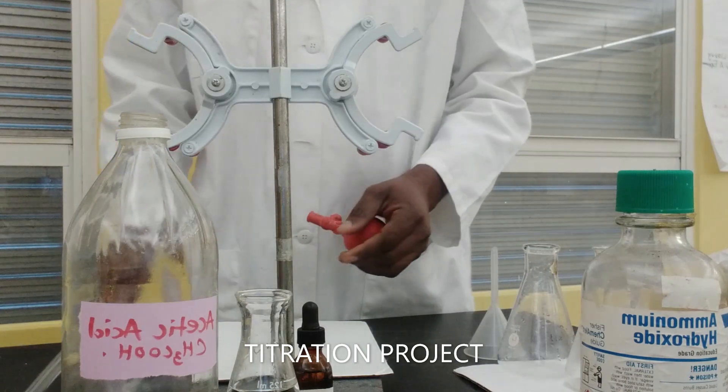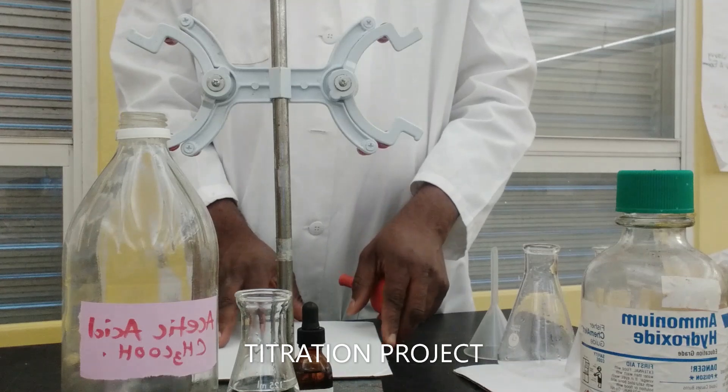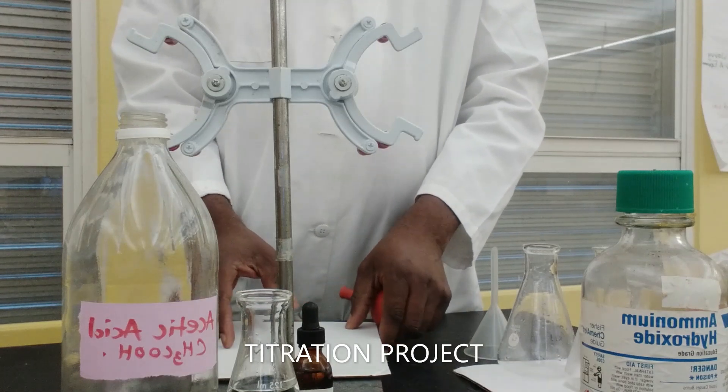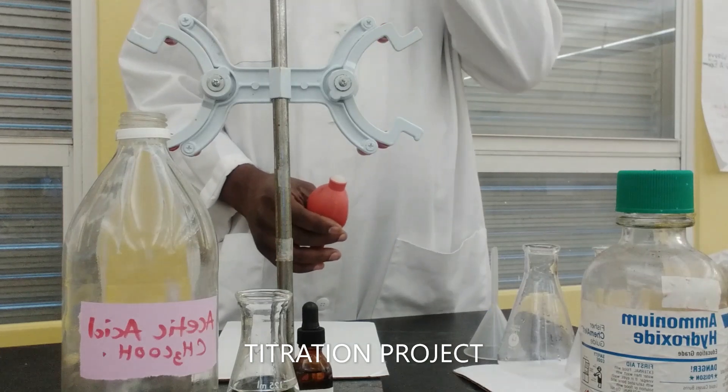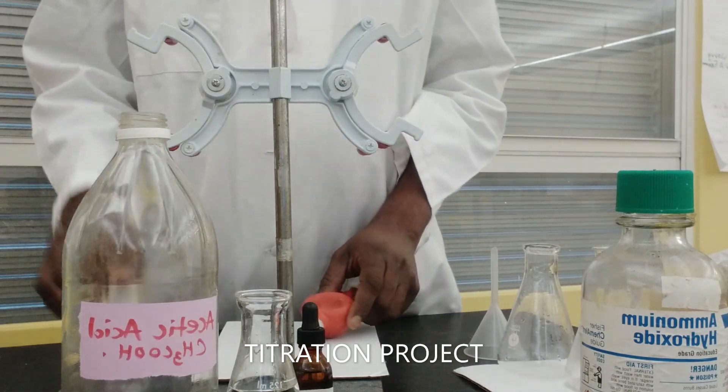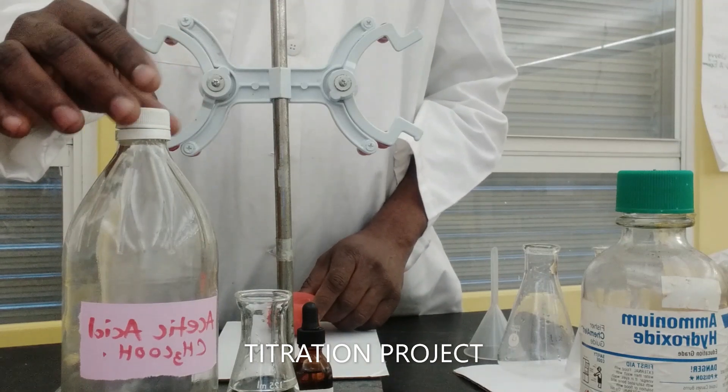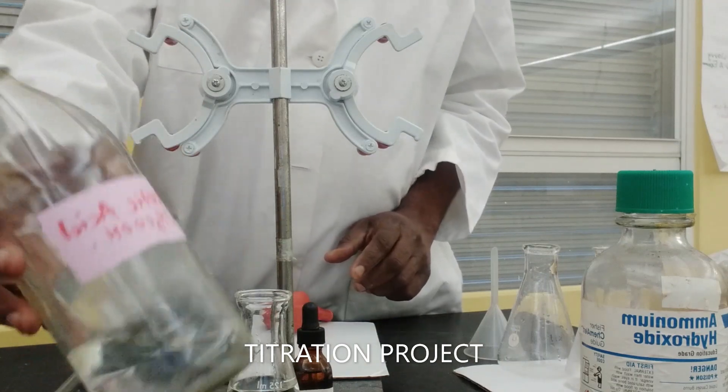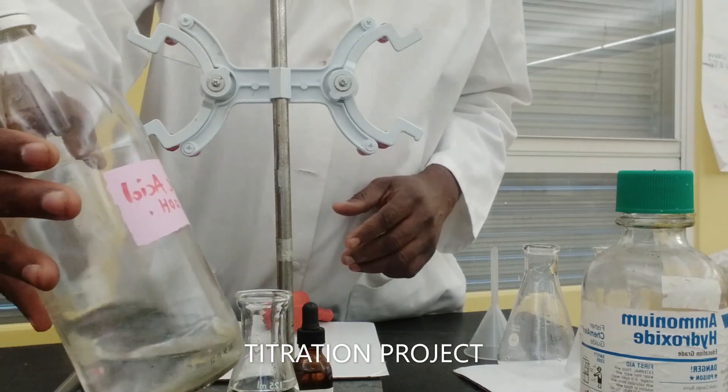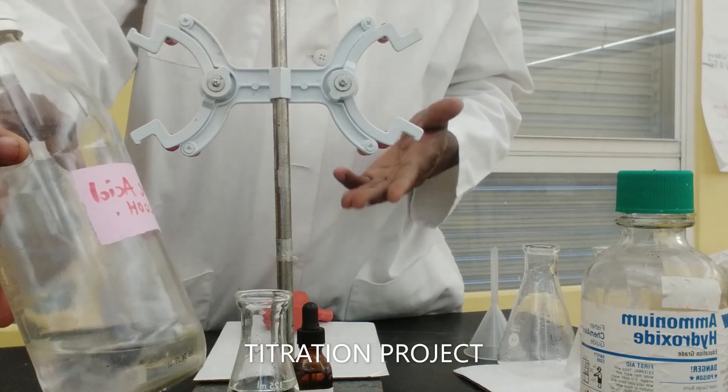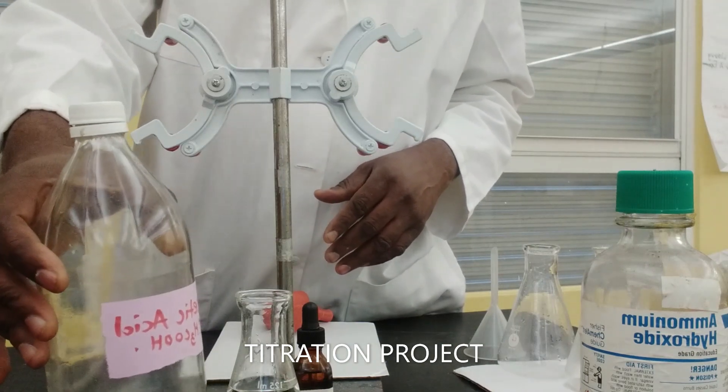Today we'll be doing an experiment on acid-base titration, which is also referred to as volumetric analysis. In today's experiment, we would be titrating a weak acid, acetic acid.